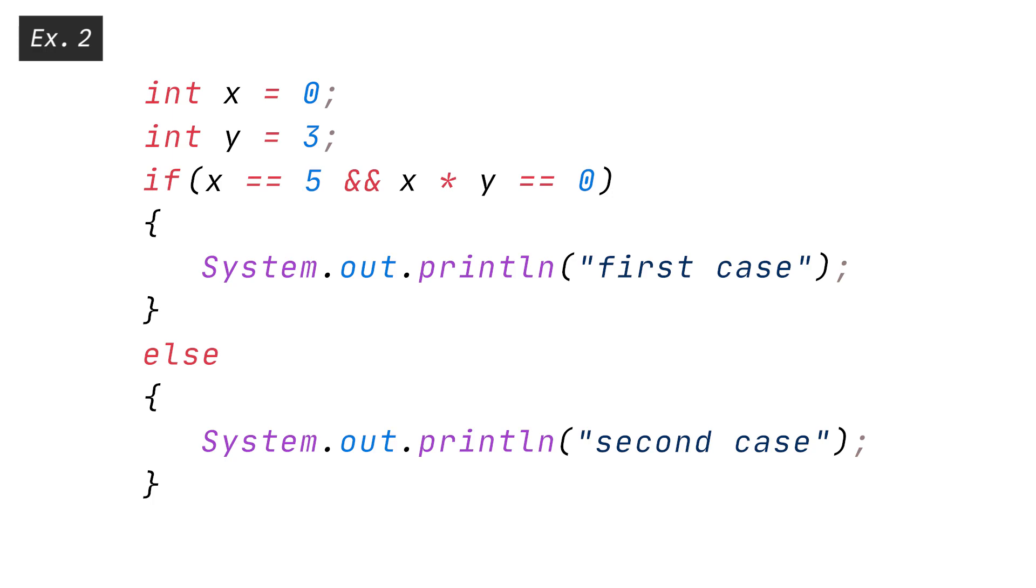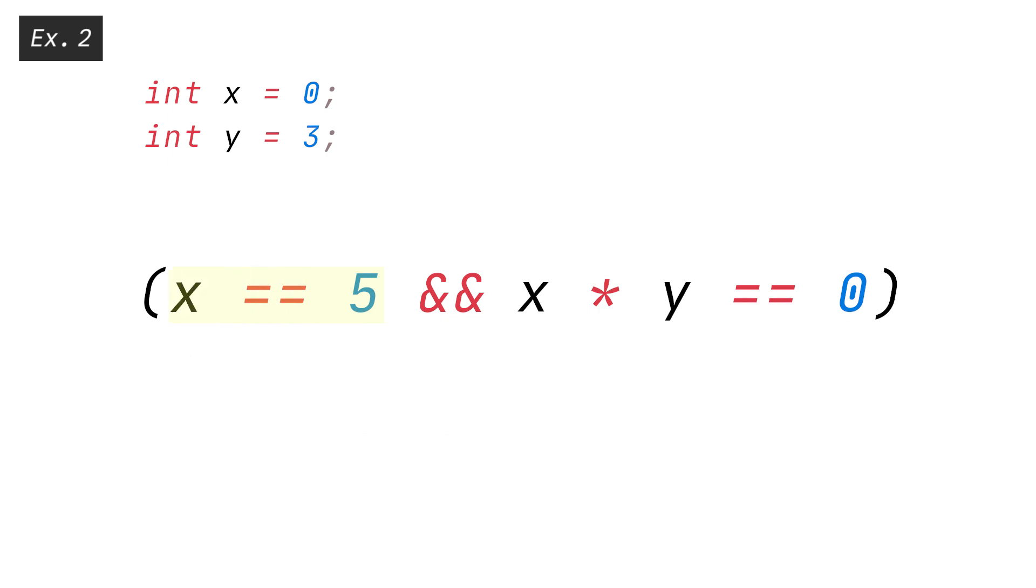In this instance, the code would print second case, because the statement X equals equals 5 returns false, and in any AND AND operation, both sides of the condition must be true.